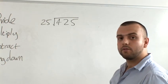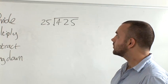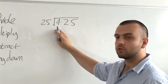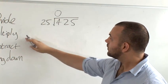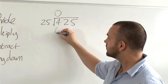So say you wanted to divide 425 by 25. Follow each of these steps as you go through the number. For example, how many times will 25 go into 4? 0. Next, multiply. What is 25 times 0? 25 times 0 is 0.